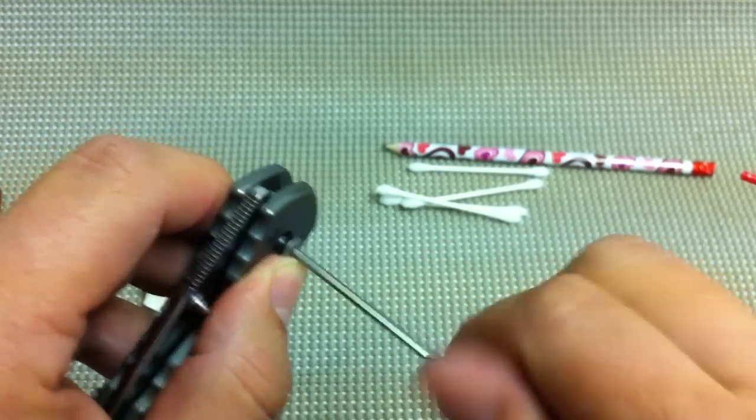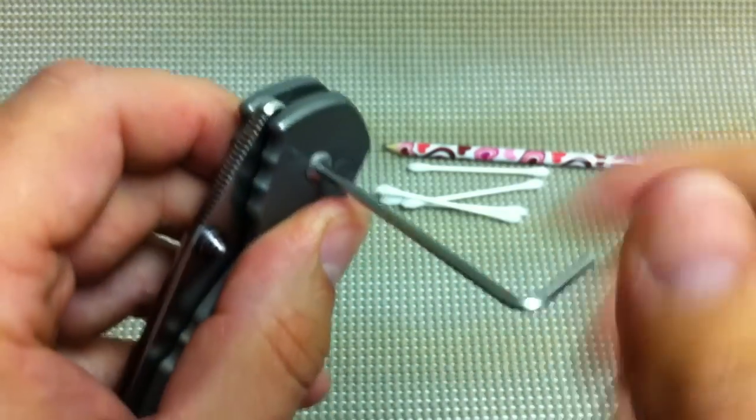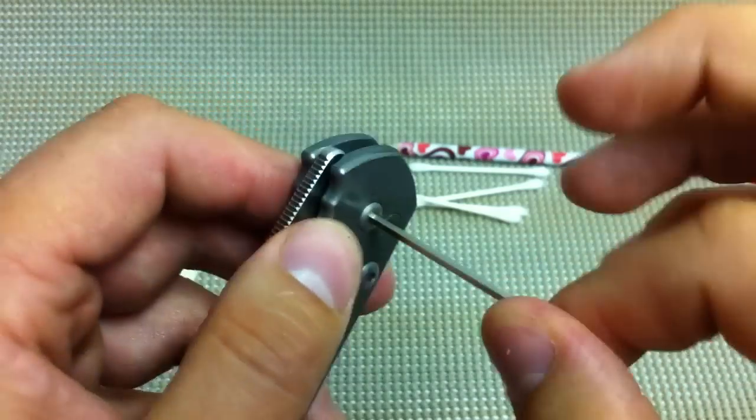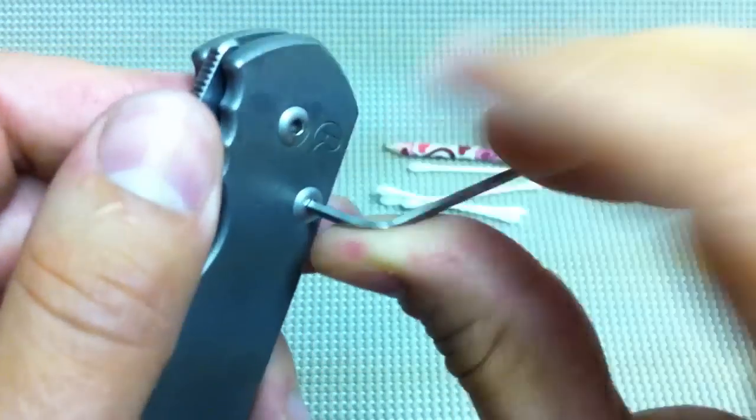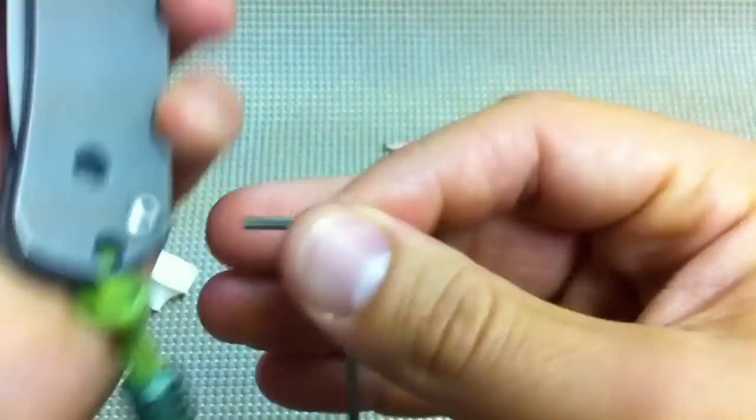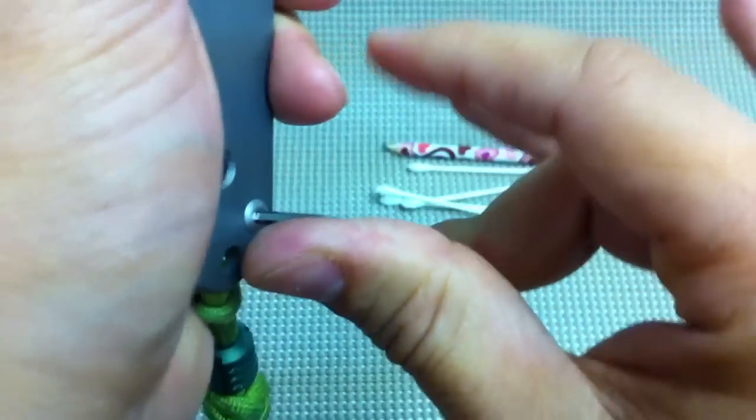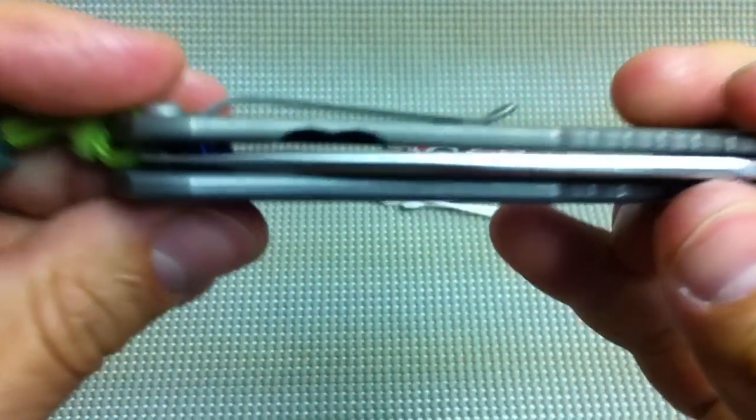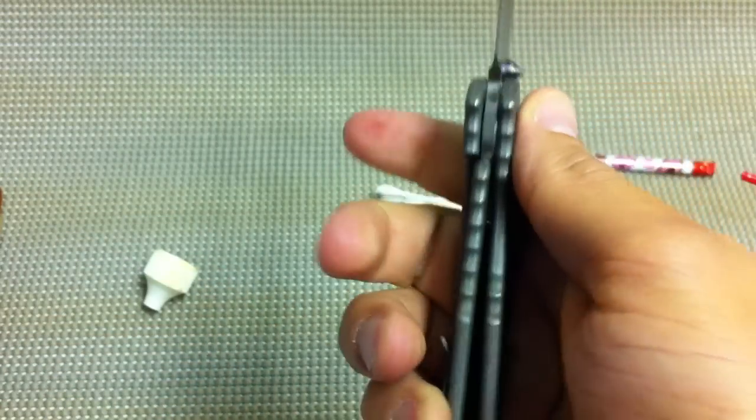All right. So, the moment of truth, which is not really a moment of truth, because with Chris Reeve it's going to be right. All right, same thing. A little bit of tension. Stop. Then I tighten this up all the way. Then tighten that up all the way. Then this is just OCD, but I check this one just to be sure. The blade should be centered. And very smooth.